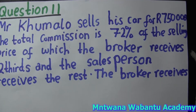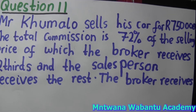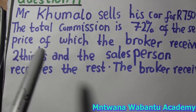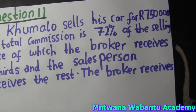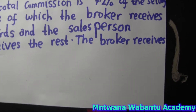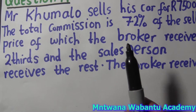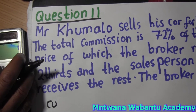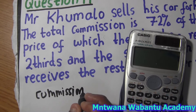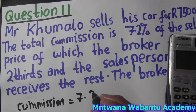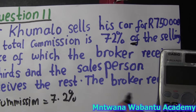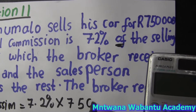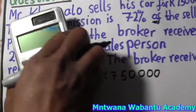Mr. Kumalo wants to sell his car for R75,000, and somebody is going to help him sell it. The total commission that's going to be offered is 7.2% of the selling price. In mathematics, 'off' means multiply, so the commission is going to be 7.2% multiplied by the selling price of R75,000.